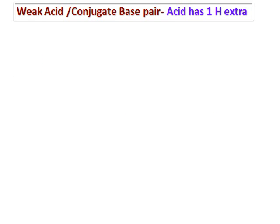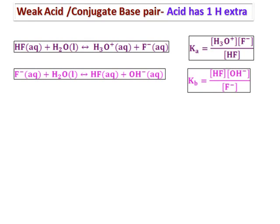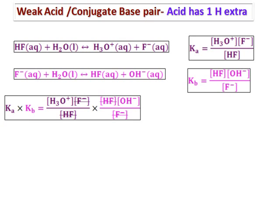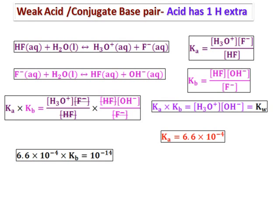Now let's see what happens with a weak acid and its conjugate base pair, and determine which is stronger. Here we must consider the ionization constant. The weak acid HF ionizes in the presence of water to give H3O plus and F minus. The conjugate base F minus reacts with water to give HF and OH minus. We know Ka times Kb equals the ion product of water, Kw, which is 10 to the power of minus 14. When Ka of HF is 6.6 × 10 to the minus 4, we can calculate Kb as 1.5 × 10 to the minus 11.